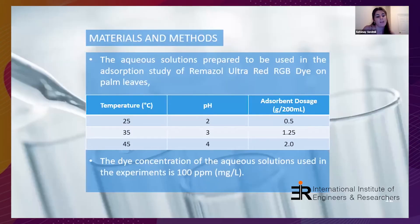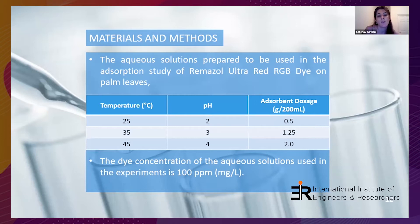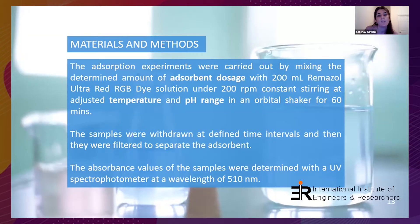Moving to materials and methods: an aqueous solution was prepared for the adsorption study of Remazol Ultra Red RGB dye on palm leaves. The temperature range is 25 to 45 degrees centigrade, pH range is 2 to 4, and adsorbent dosage is 0.5 to 2.0 grams in 200 milliliters. The initial dye concentration of aqueous solution is 100 ppm. Adsorption experiments were carried out by mixing a determined amount of adsorbent dosage with 200 milliliters of dye solution under 200 rpm at adjusted temperature and pH with an orbital shaker for 60 minutes. The samples were then filtered to separate the adsorbent, and the absorbance values of samples were measured with a UV spectrophotometer.